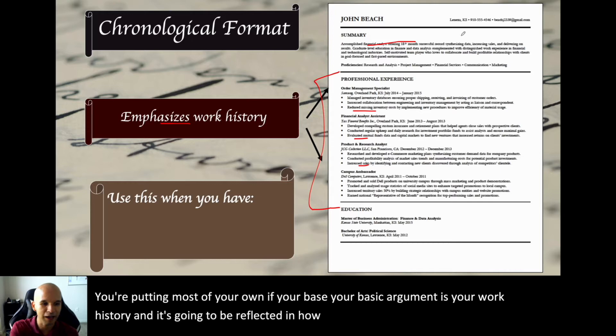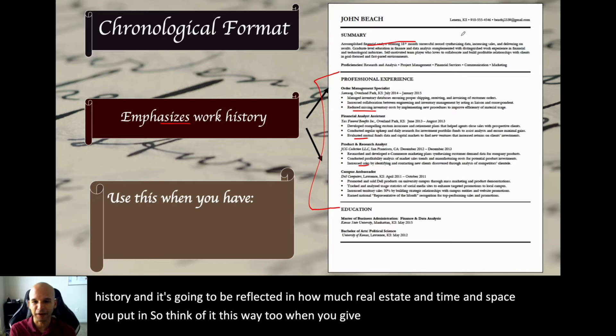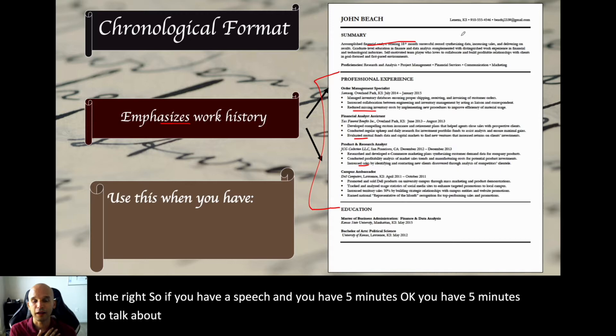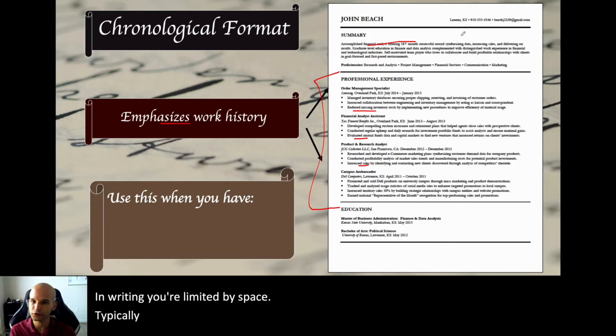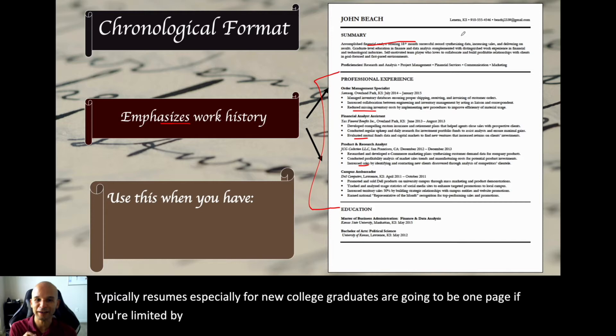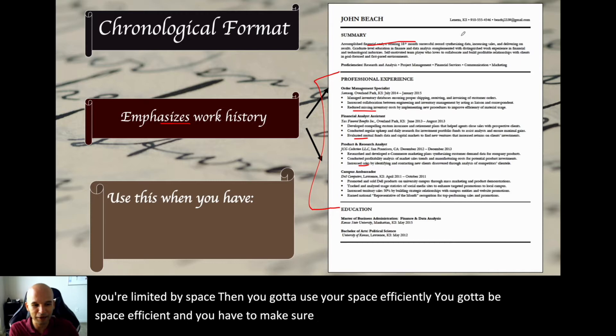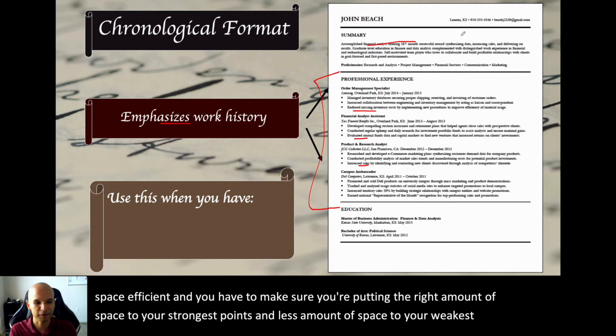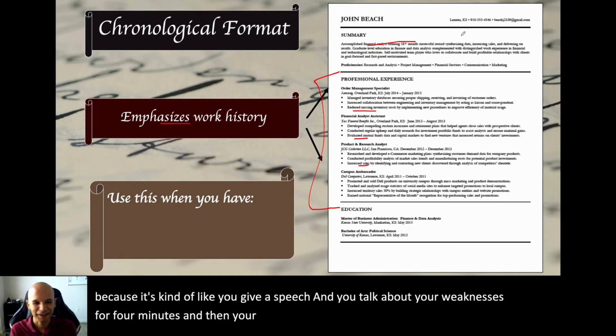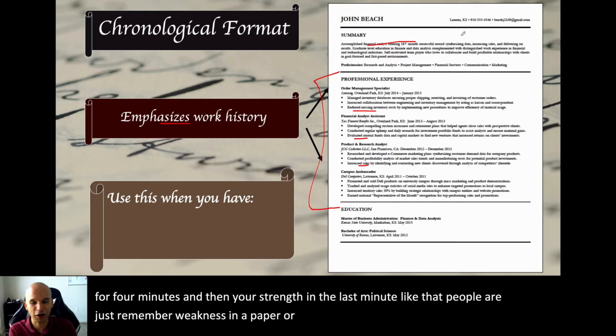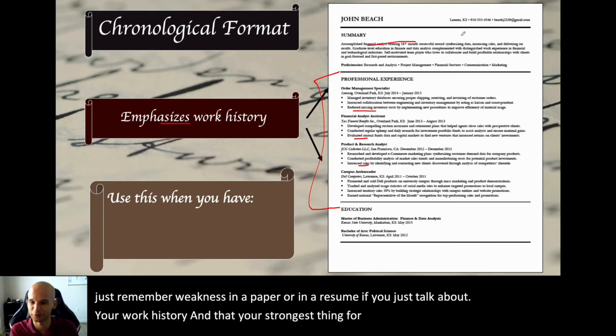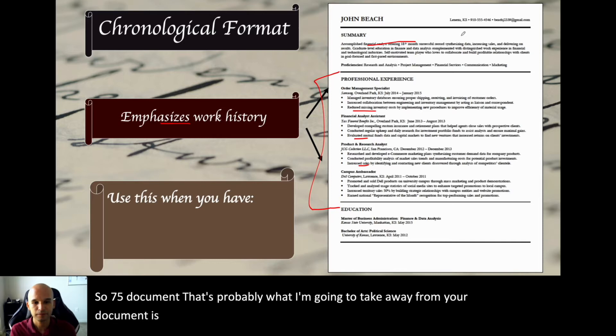When you do a chronological format resume, you're putting most of your space and most of your oomph — your basic argument is your work history. Think of it this way: when you give a speech, you're limited by time. In writing, you're limited by space. Resumes, especially for new college graduates, are going to be one page. You have to use your space efficiently and put the right amount of space to your strongest points. If 75% of the document is your work history, that's probably what the reader takes away.